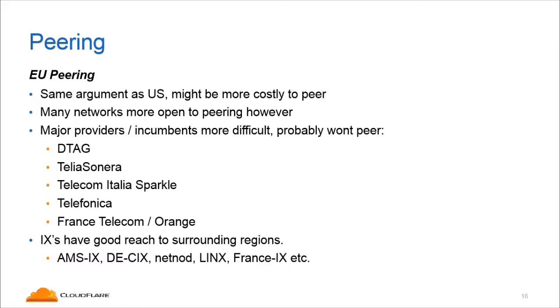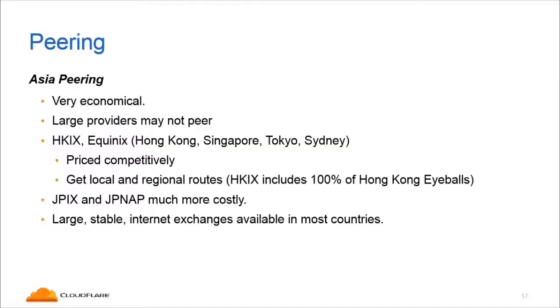In Asia, where I was working previously, it's very economical to peer where transit is still in the tens of dollars in some cases, so connecting to an internet exchange is great value. Some exchanges, like the Hong Kong Internet Exchange, have 100% of the country on the exchange. I don't think there are many other exchanges in the world like this. By connecting to the Hong Kong Internet Exchange, you get all of Hong Kong as well as other parts of the region.